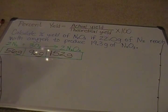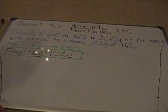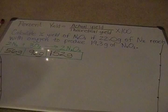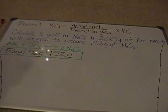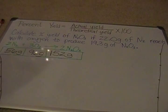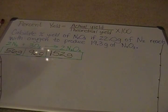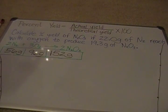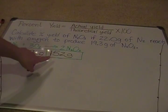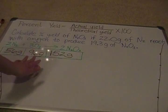Your actual yield should be smaller than your theoretical yield for the reasons I briefly discussed. Here is a percent yield problem from our review sheet for the test tomorrow. It says: calculate the percent yield of dinitrogen trioxide (N2O3) if 22.0 grams of N2 reacts with oxygen to produce 19.3 grams of dinitrogen trioxide. The chemical equation is 2N2 + 3O2 → 2N2O3, and that's already balanced.